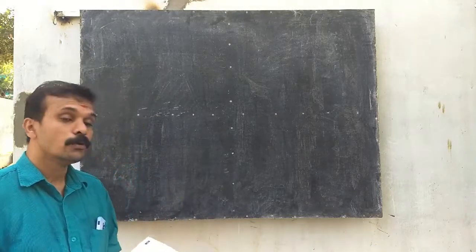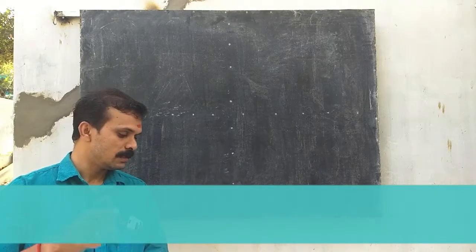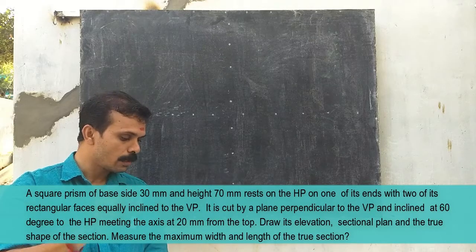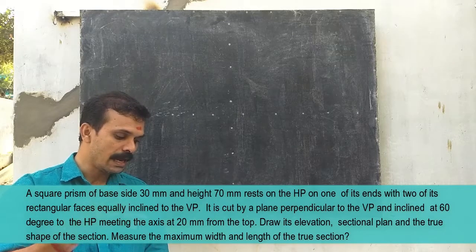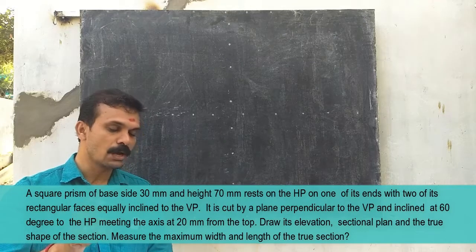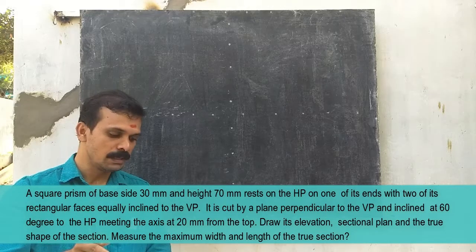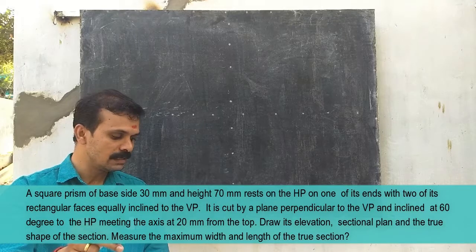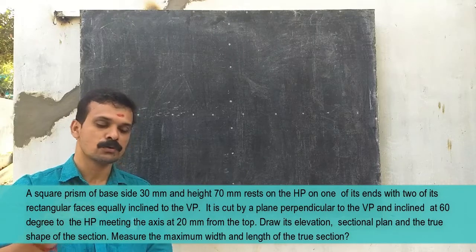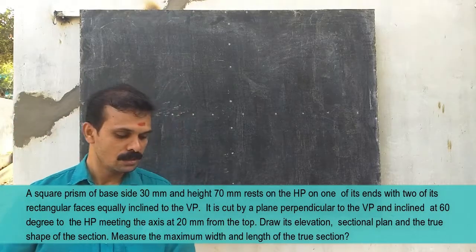We are moving to problem 5.5 in your workbook — a section plane inclined to HP. The problem: a square prism of base side 30 mm and height 70 mm rests on HP on one of its ends, with two of its rectangular faces equally inclined to VP. It is cut by a section plane perpendicular to VP, inclined at 60 degrees with HP, meeting the axis 20 mm from the top. Draw its elevation, sectional plan, and true shape of the section, and measure the maximum width and length.